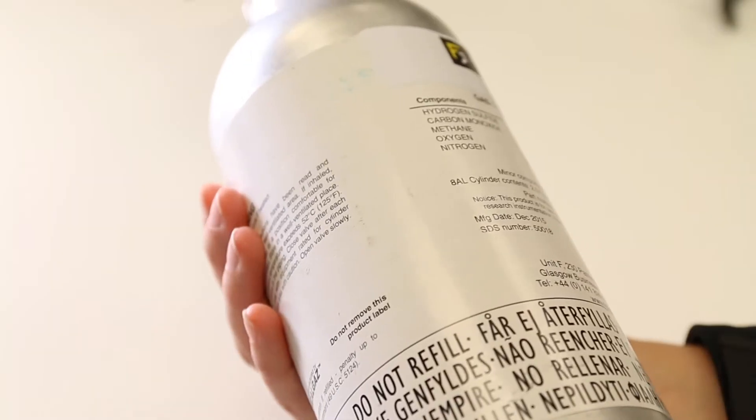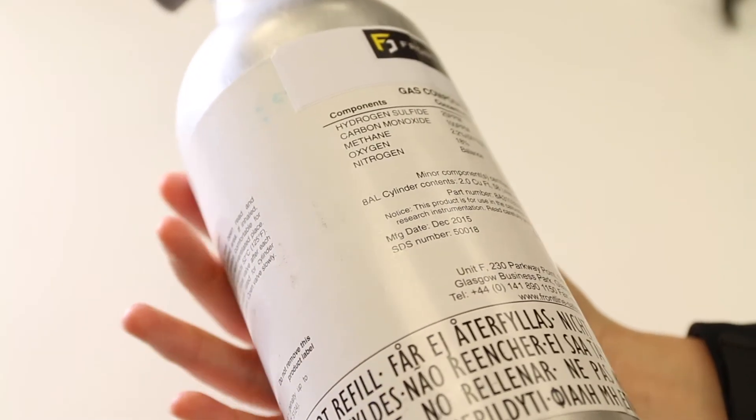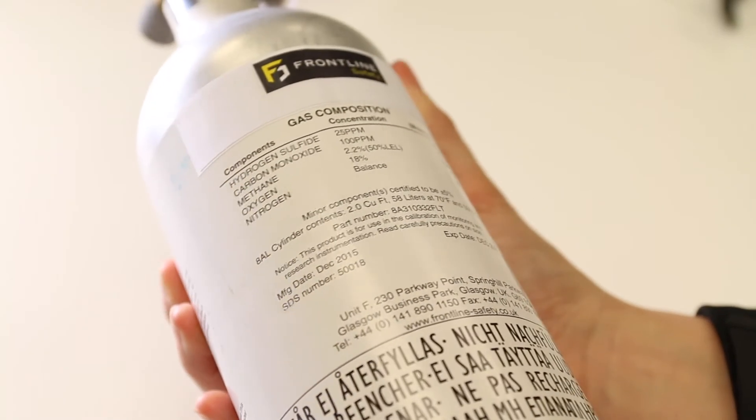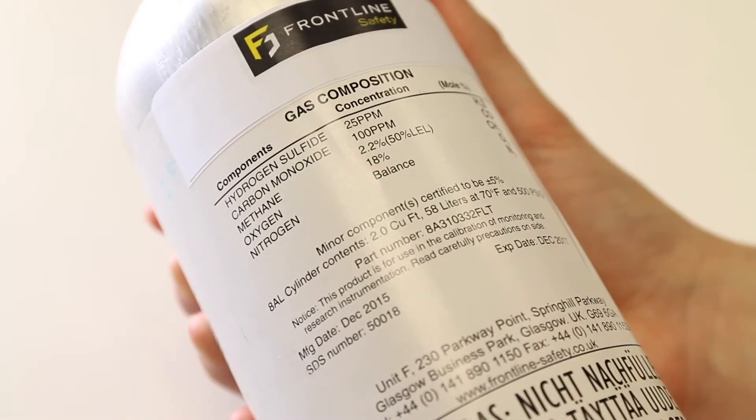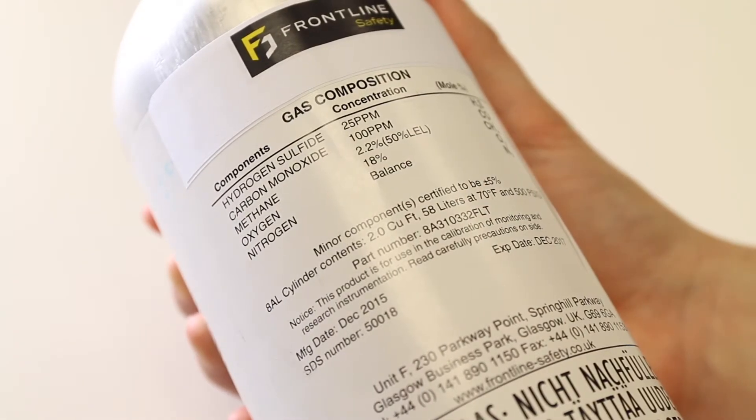In this case we're using 25 ppm H2S, 100 ppm CO, 2.2% CH4, and 18% O2 in a balance of nitrogen.